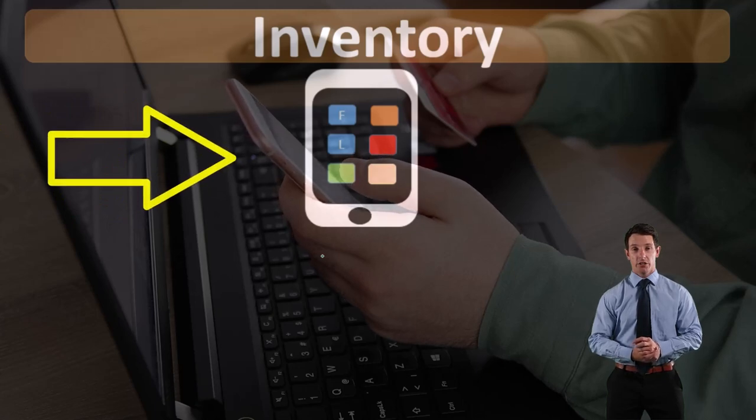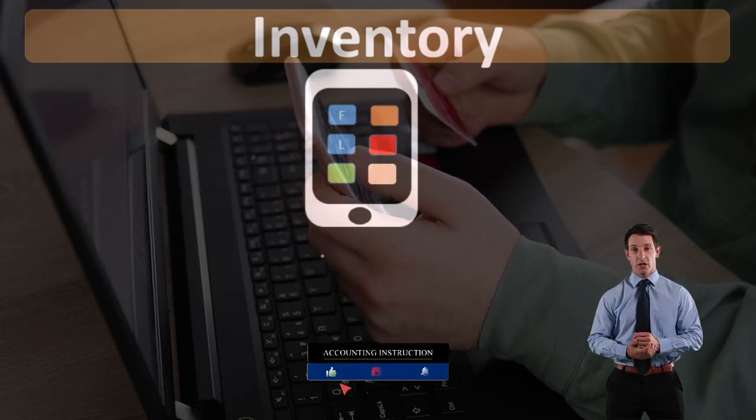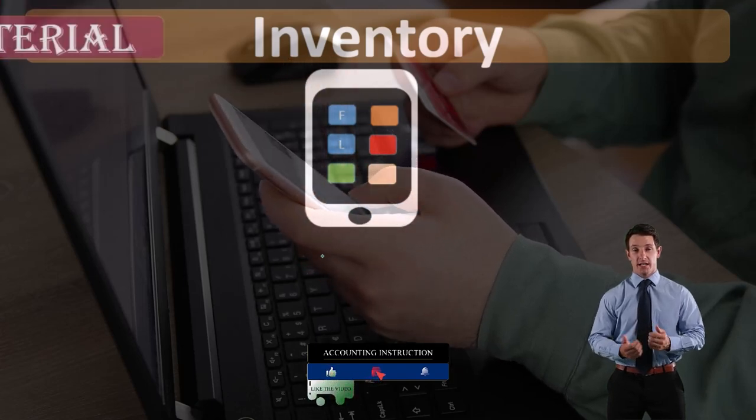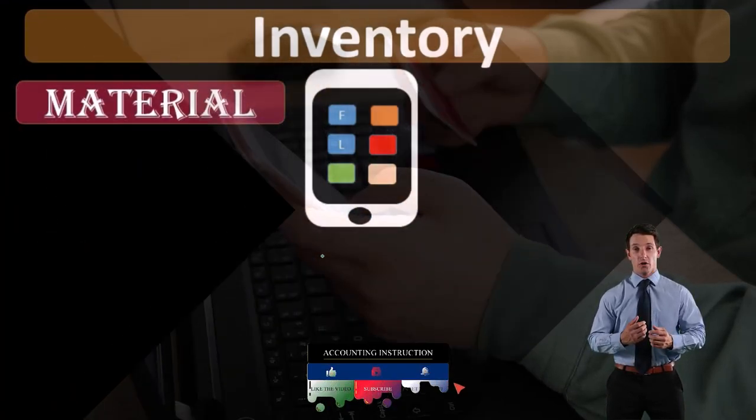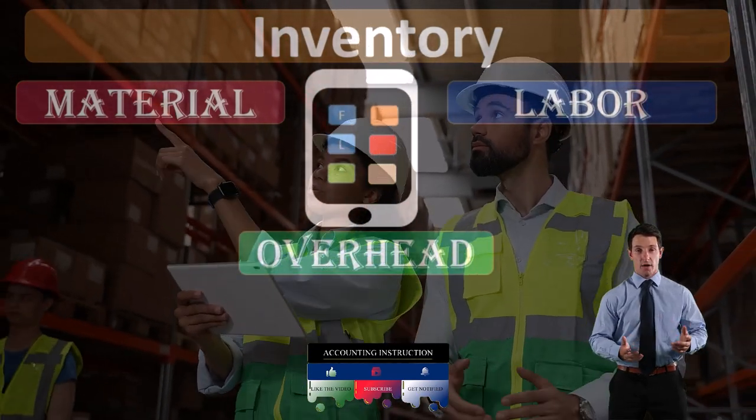Two ways to process the costs of inventory typically are a process cost system or a job cost system. Under either method, we would want to break the costs out into materials, labor, and overhead.